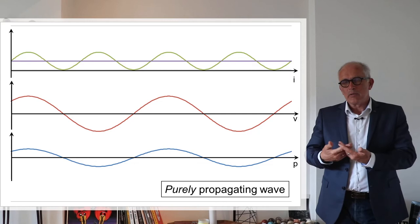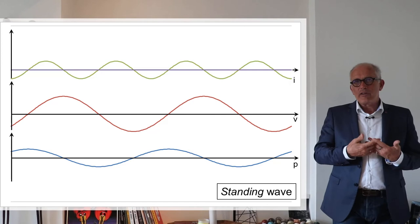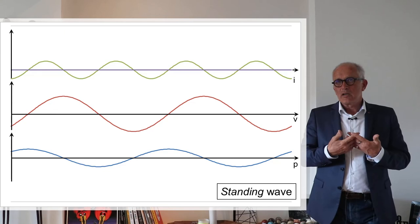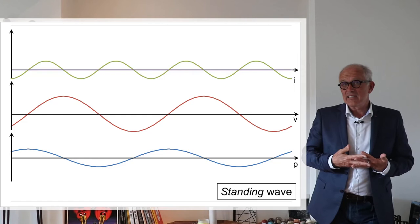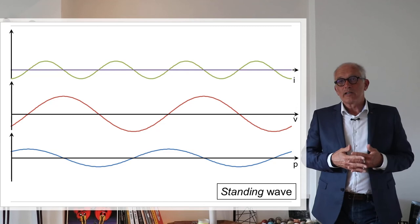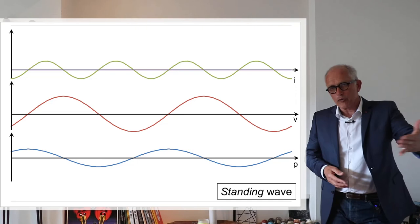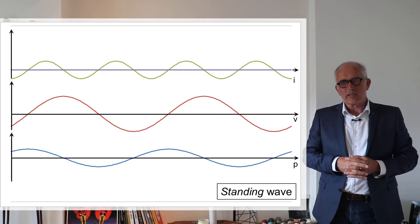And the last case that we are going to see is when the pressure and the velocity signal have a phase difference of 90 degrees. So they are in phase quadrature. And in this case, you see that the active intensity is equal to zero and that the reactive intensity fluctuates around that zero value. This is characteristic of standing waves, because there is no net flow of power from the source to the receiver. Whatever flows in one direction also flows in the other direction.